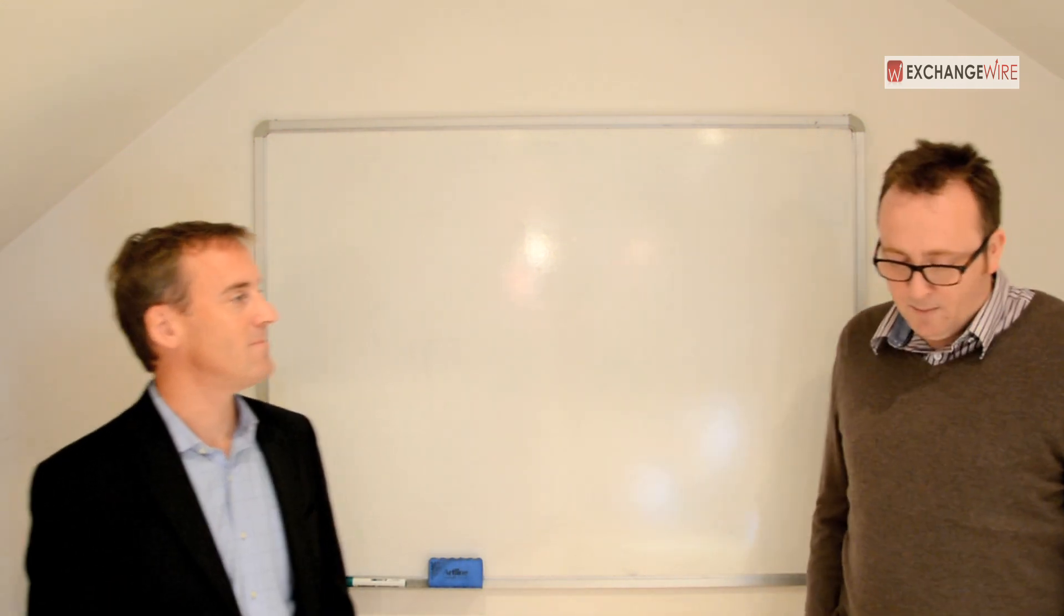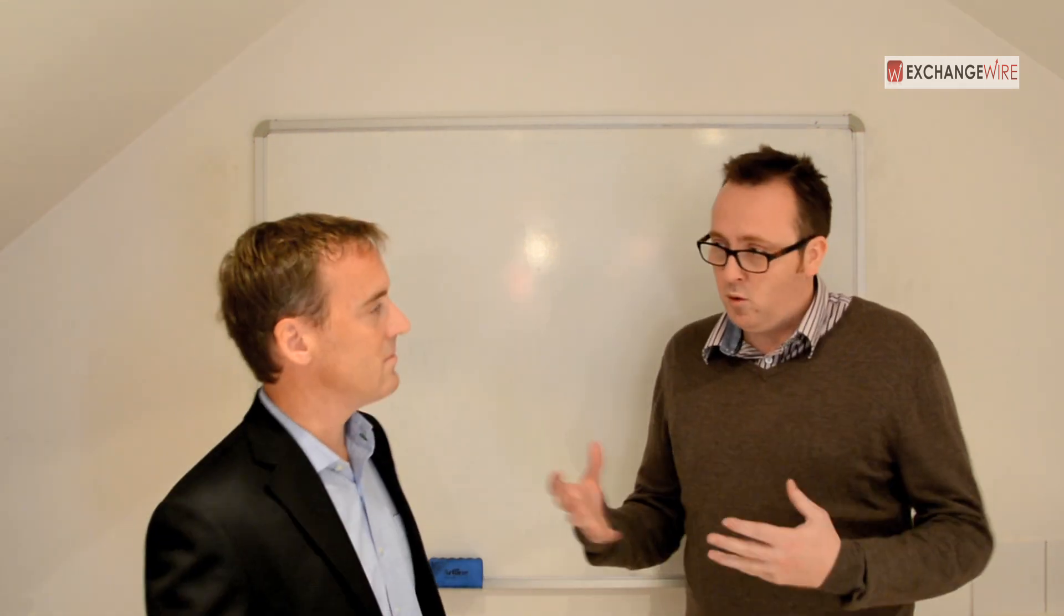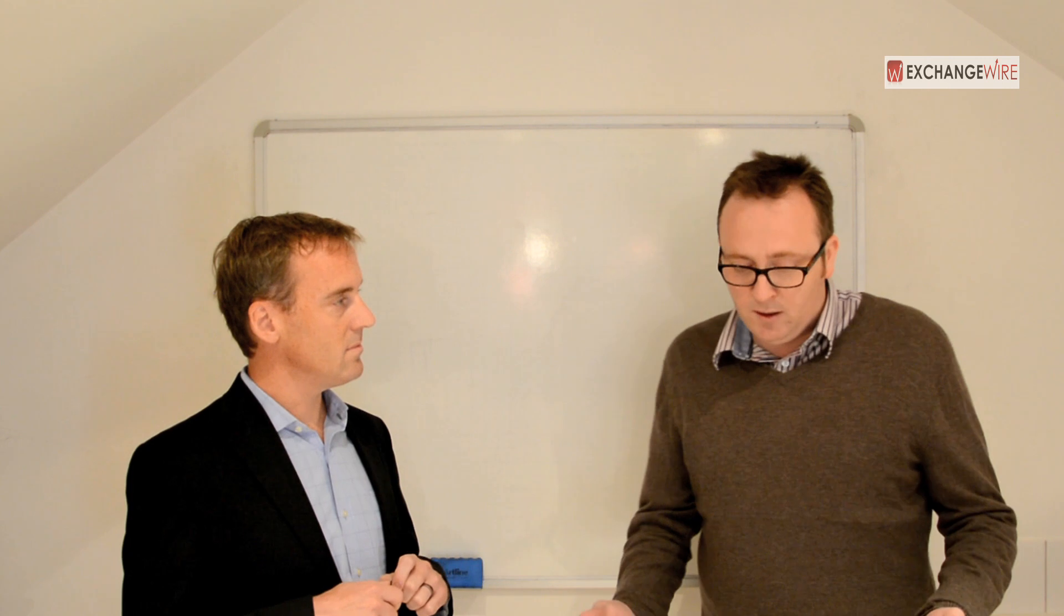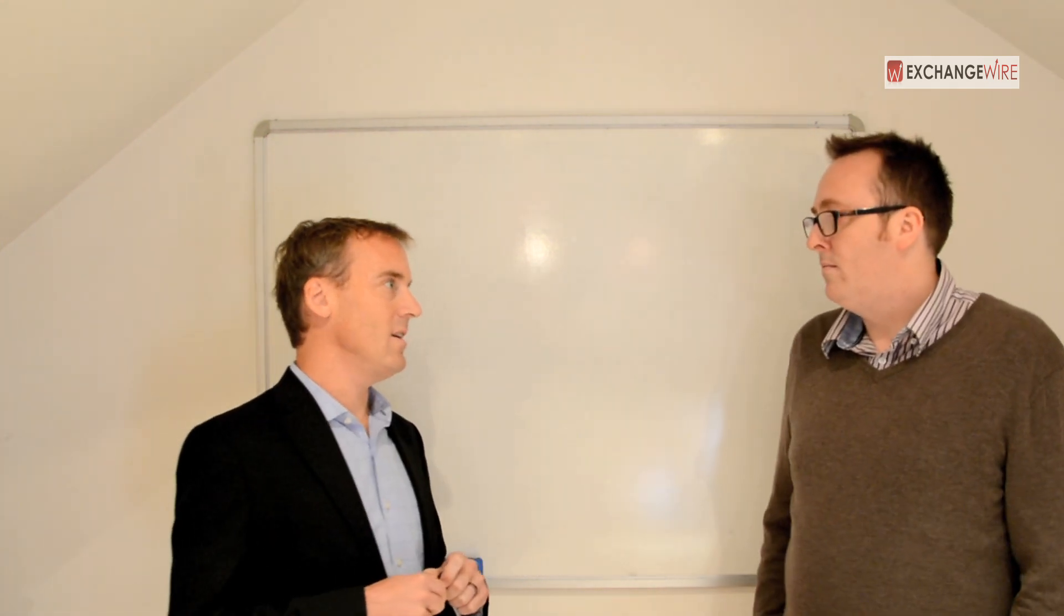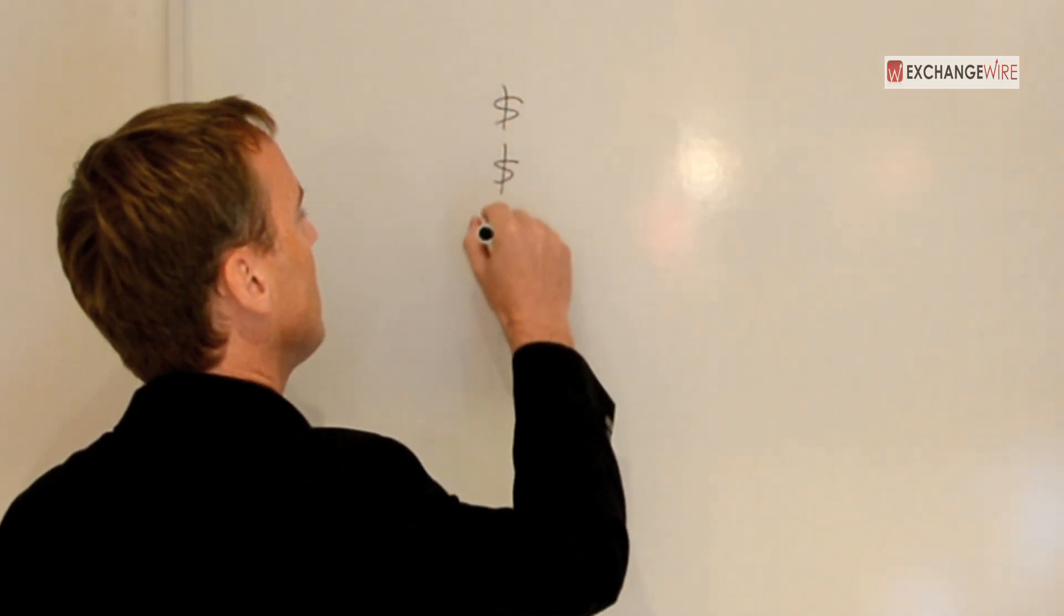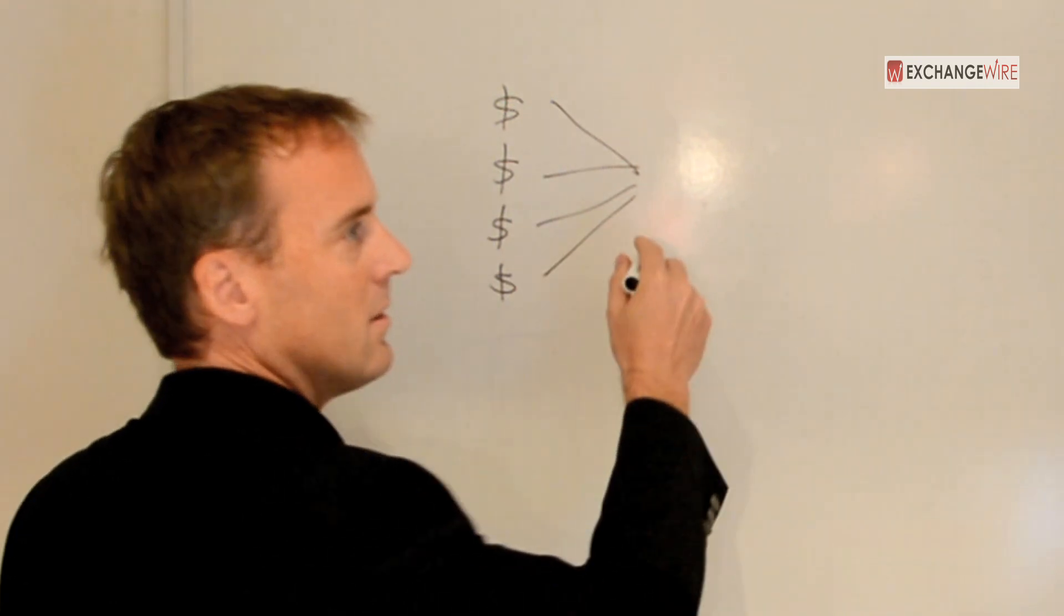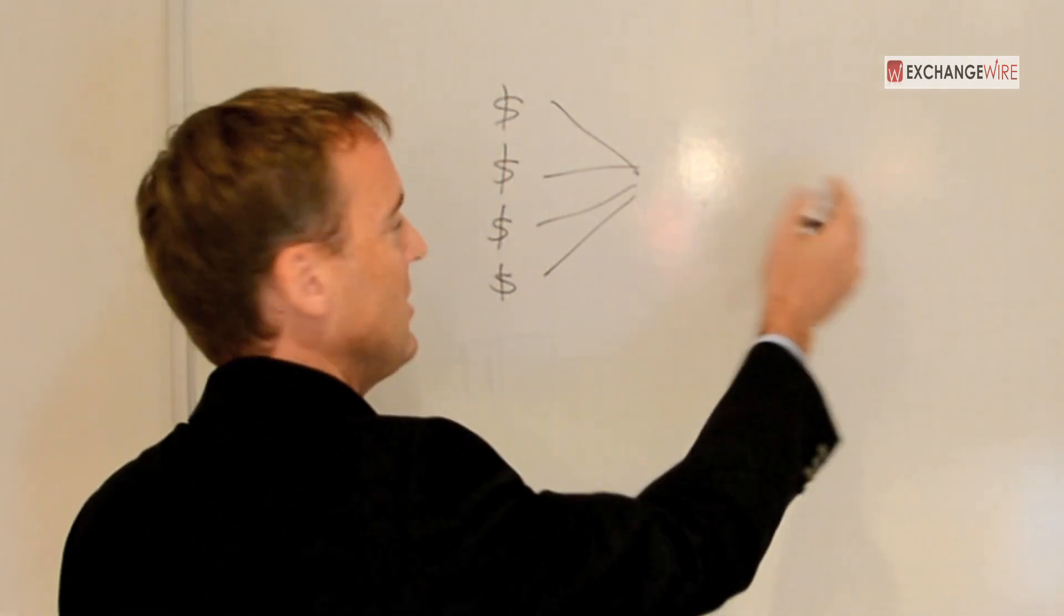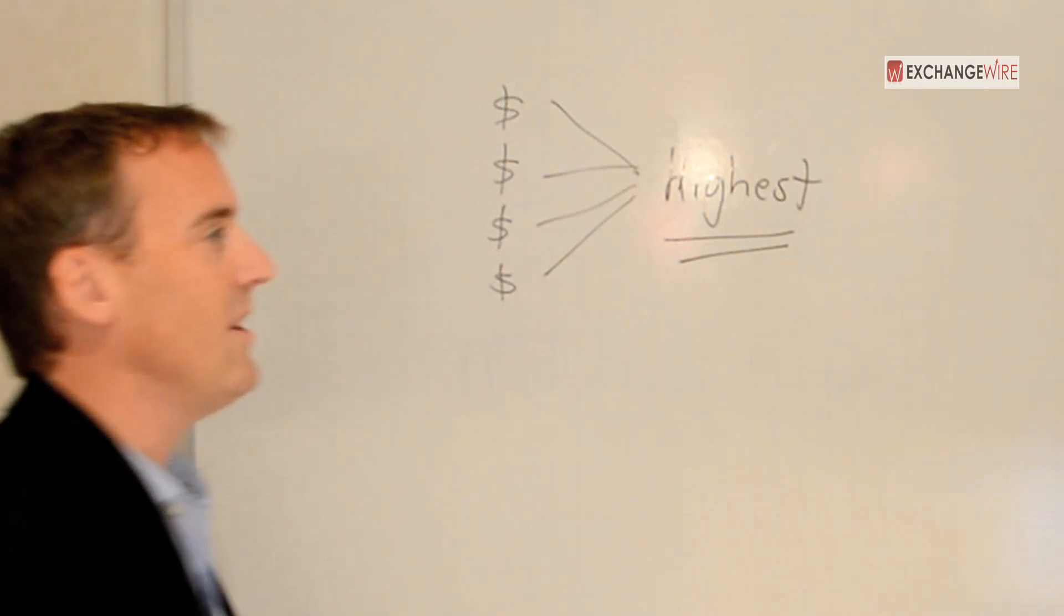So we're going to map out today the revenue optimization piece. What publishers should be doing in the real-time space and how it all works together. What we're seeing a lot today is a conventional belief by publishers that they need to aggregate all demand into one area and have one decision maker award, and this is the inventory. So they aggregate all demand, and they've got their inventory over here, and then they award that impression to the highest bidder. That is not the right approach.